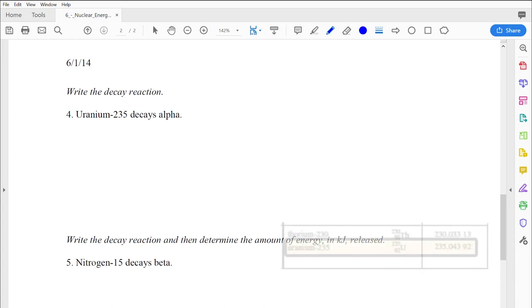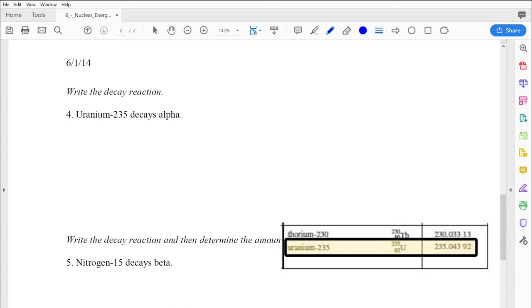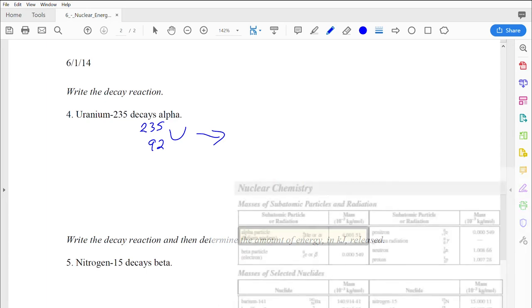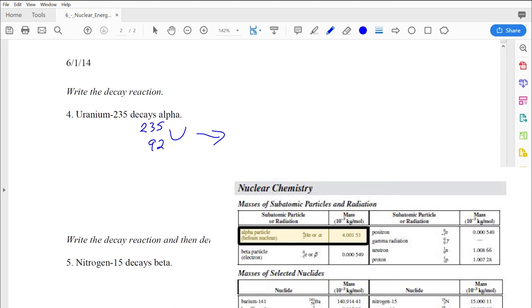Uranium-235 decays alpha. So what does that look like? Well, uranium-235 I've got to find on my table on page 8. I can see it's actually the bottom right-hand side. The U for uranium, 235 is the mass number, the number of protons and neutrons, and 92 is the atomic number, just how many protons are present.